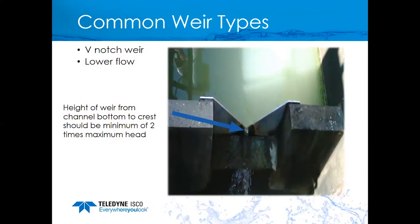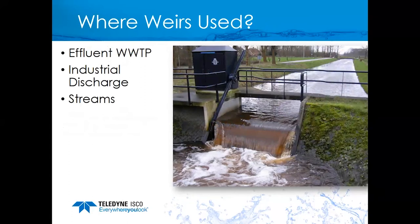Another common type is the V-notch weir, used in lower flow applications. The size of the weir depends on the expected flow rate through the channel. The channel from the bottom of the crest should be at least two times the maximum head to determine weir size. The ISCO Flow Data Handbook has excellent sizing examples — consult the ISCO website to get a copy. Weirs are commonly used at the effluent of wastewater treatment plants where solids have been removed, and also for industrial discharge and streams.